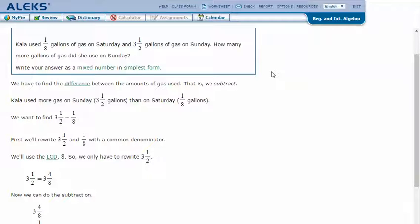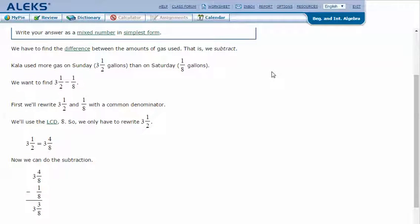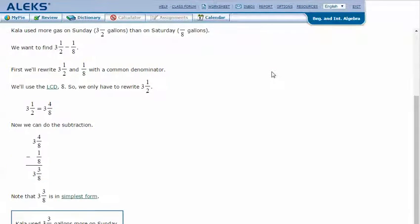First, we'll rewrite three and a half and one-eighth with common denominators. We'll use the least common denominator, eight. So we only have to rewrite three and a half. Two times four is eight, so we have to do one times four, which is four. So three and a half rewritten with a common denominator of eight is three and four-eighths.